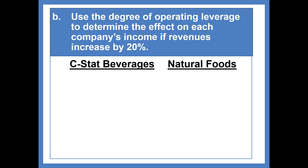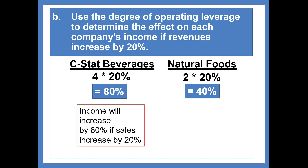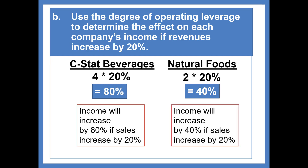Question B: use the degree of operating leverage to determine the effect on each company's income if revenues increase by 20%. Rather than re-preparing the income statement, we take the degree of operating leverage of 4 times the 20% increase in sales, giving an 80% income increase for the beverage company. For the food company, their degree of operating leverage of 2 times 20% means profits will increase 40%. So if sales increase by 20%, the beverage company's income increases 80% while the food company's income increases only 40%.